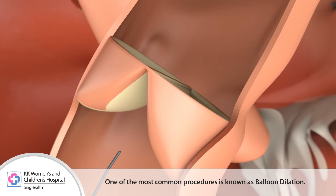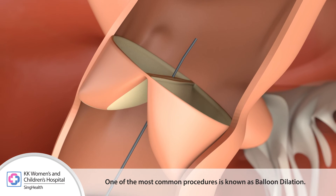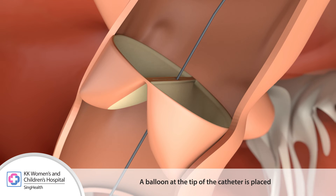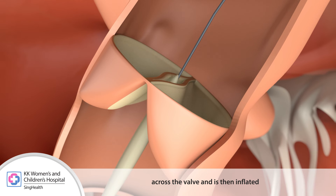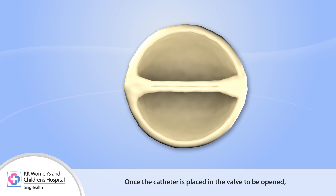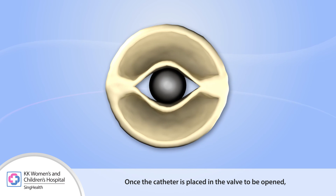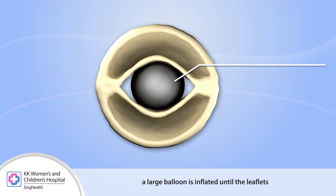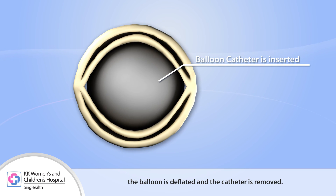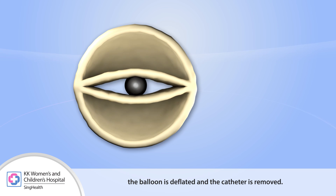One of the most common procedures is known as balloon dilation. A balloon at the tip of the catheter is placed across the valve and is then inflated to open up the narrow valve. Once the catheter is placed in the valve to be opened, a large balloon is inflated until the leaflets of the valve are opened. Once the valve has been opened, the balloon is deflated and the catheter is removed.